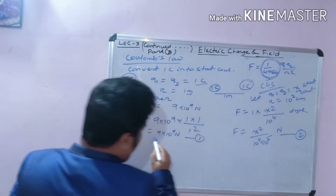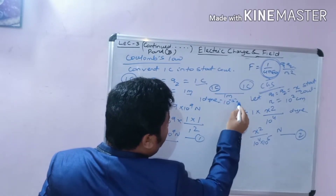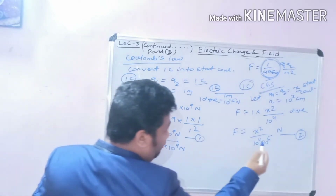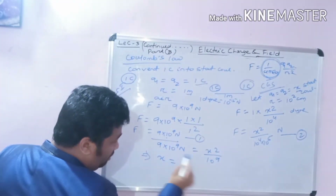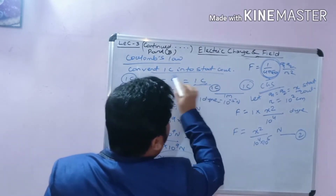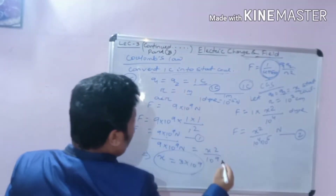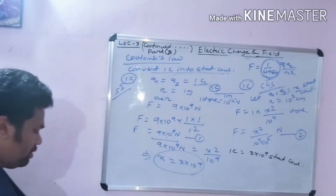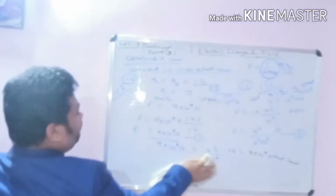Comparing equation 1 (SI result: 9 into 10 to the power 9 newton) and equation 2 (CGS result), we get 9 into 10 to the power 9 equals X squared by 10 to the power 9. Solving, X equals 3 into 10 to the power 9. Therefore 1 Coulomb equals 3 into 10 to the power 9 stat-coulombs. Very simple and interesting concept.